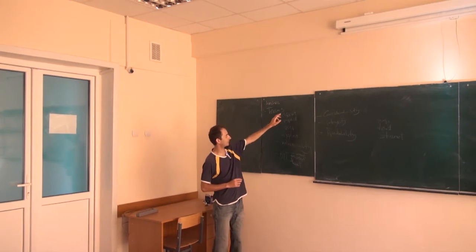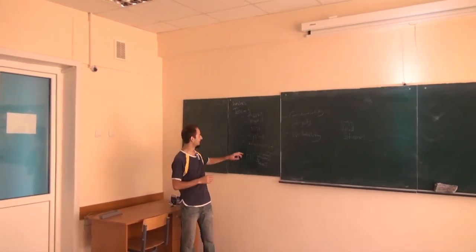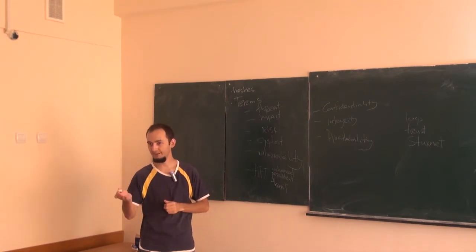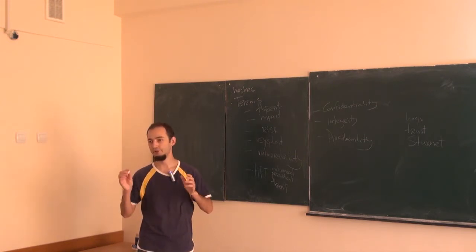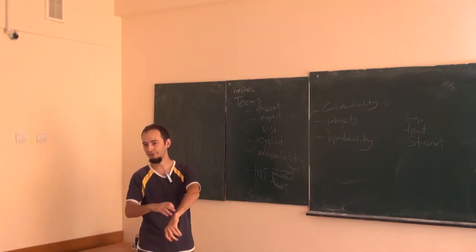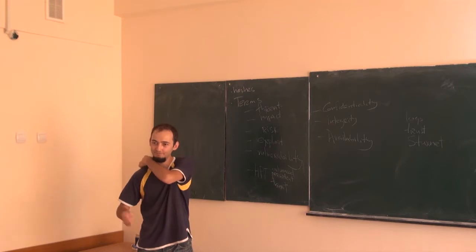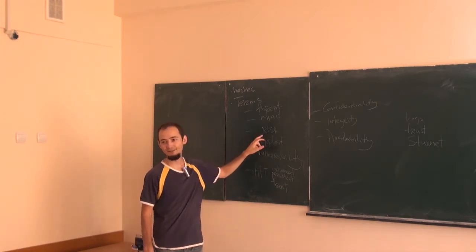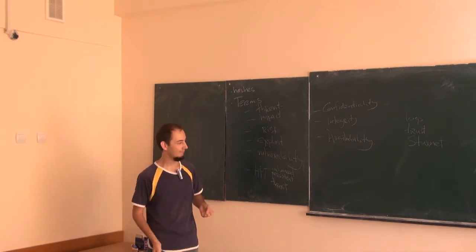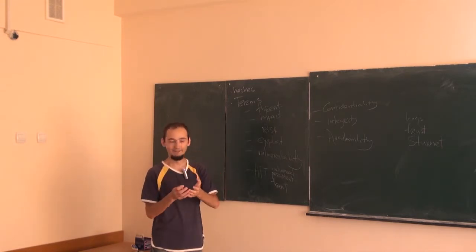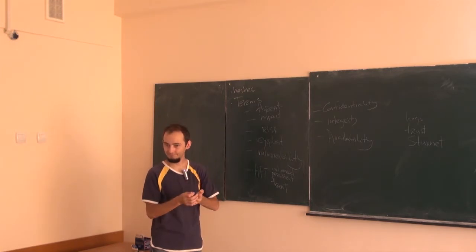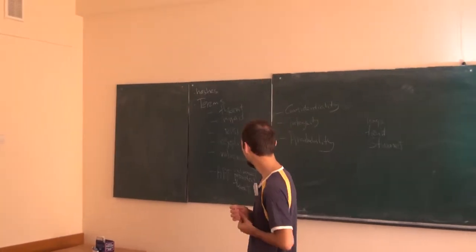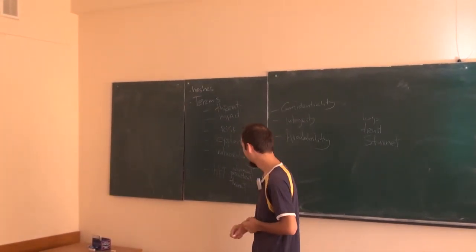If you take the threat and multiply it with the likelihood of this threat actually exploiting one of your vulnerabilities, you get risk. For example, last time we discussed sharks and humans. Sharks are a threat to any human being because we don't have armor and we don't have stronger teeth. But if you live in Moldova, the risk of being attacked by a shark is zero because we don't have sharks around. But if you live in Australia and you swim in the surrounding waters, then the threat can materialize. So the risk is non-nil.